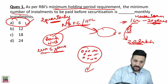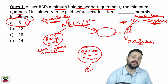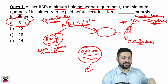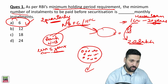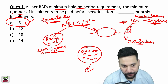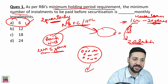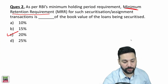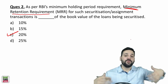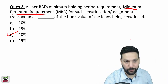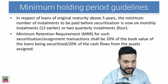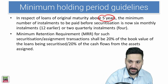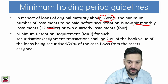Otherwise the HFC would become like a sales company, just selling housing loans and securitizing them to banks and financial institutions. To prevent this, first they should have received 6 monthly installments — it used to be 12 but now it is 6. Secondly, they should retain 20 percent of the book value or future cash inflows. This was previously 15 percent. These are the Minimum Holding Period guidelines applicable for loans with original maturity above 5 years.